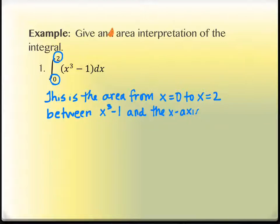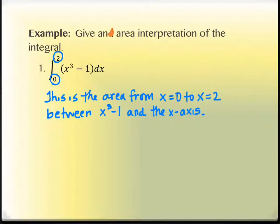That's not exactly the description I have written in my notes. What I wrote down is: this is the difference in the area trapped between the curve — that's x cubed minus 1 — and the x-axis, from 0 to 2. That's what it is.